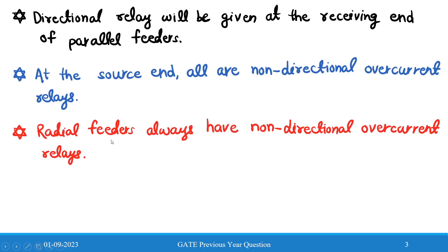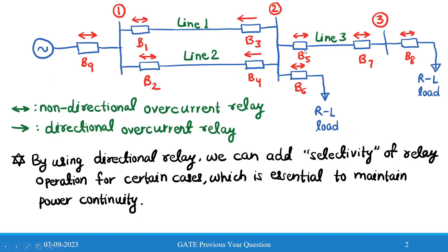The third point is that radial feeders always have non-directional overcurrent relays, provided there are no active sources. Line three is a radial feeder, so all relays corresponding to it are non-directional: R5, R7, and R8 will be non-directional overcurrent relays. R6 will also be non-directional because the load is passive and cannot reverse the current.